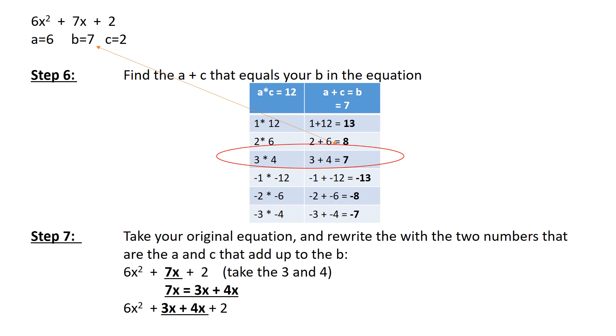We found our 3 times 4, which equals 12. And 3 plus 4 equals 7. What we're going to do with that, that 3 plus 4 equals 7, instead of 7, the original equation is 6x² + 7x + 2. That 3 and 4, which equals 7, I'm going to replace that. I'm going to replace 7x with those two numbers. 7x equals 3x plus 4x.